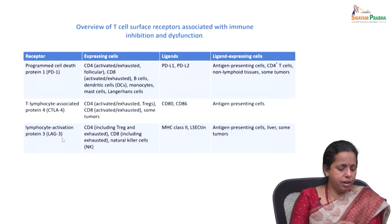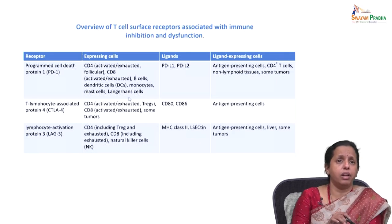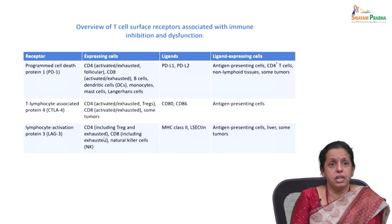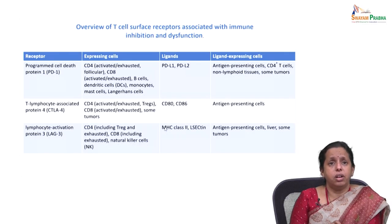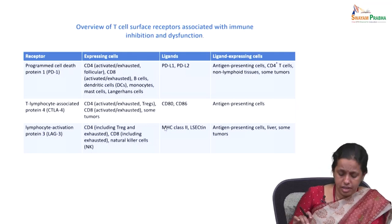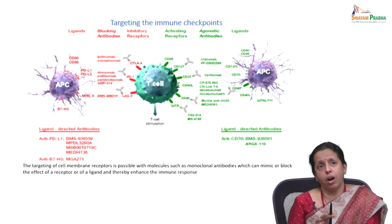LAG-3 is expressed by CD4, CD8, and natural killer cells, with ligands MHC class II and L-selectin. The ligand-expressing cells are antigen presenting cells and some tumors. Having established what immune checkpoints are, targeting these cell membrane receptors is possible with monoclonal antibodies.